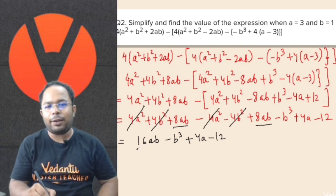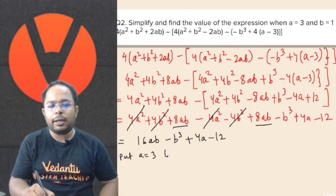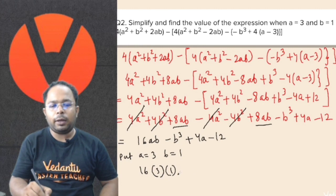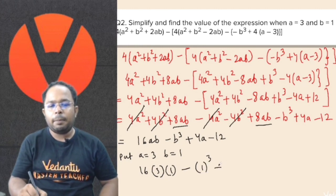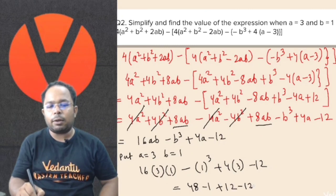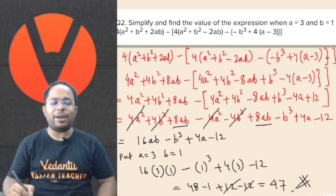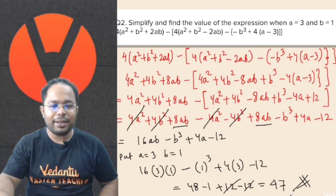Now what we can do is put the values a is equal to 3 and b is equal to 1. So: 16 into 3 into 1 minus 1 whole cube plus 4 into 3 minus 12. We get 16 times 3 is 48, minus 1, plus 12 minus 12. The 12s cancel and ultimately we get the answer as 47. The right answer is 47.